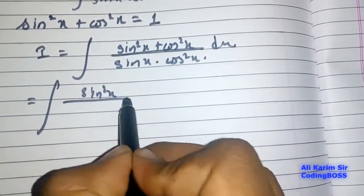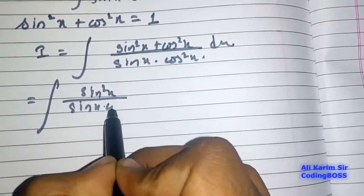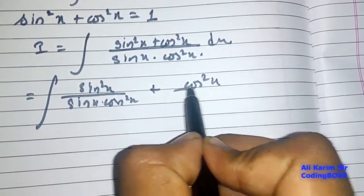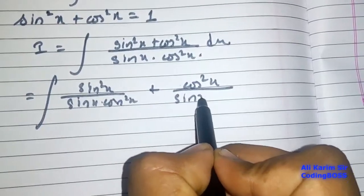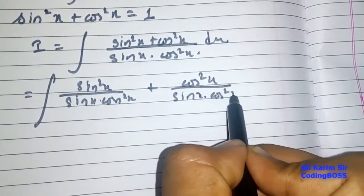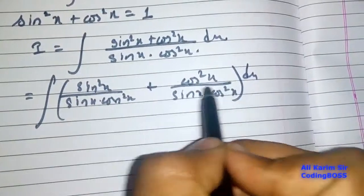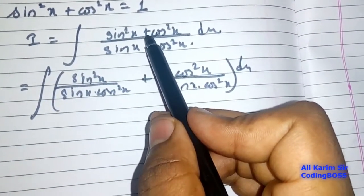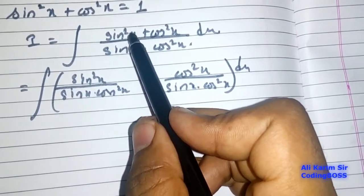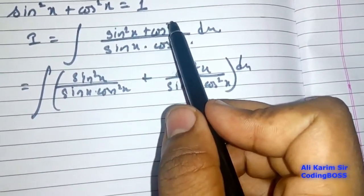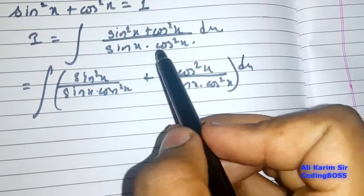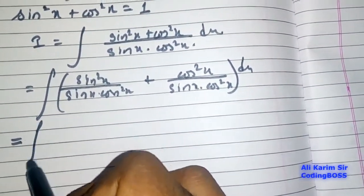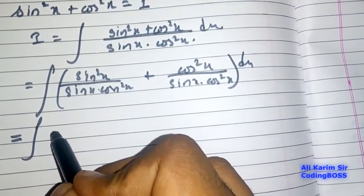Now I can solve this by separating the terms: integration of sin squared x upon sin x into cos squared x, plus cos squared x upon sin x into cos squared x, dx — applying dx to the entire term. I have separated the numerator because there was a plus sign: sin squared x with the entire denominator, and cos squared x with the entire denominator.